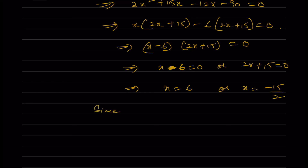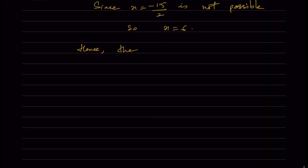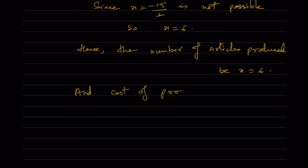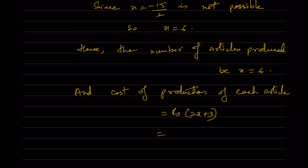Since x = -15/2 is not possible as the number of articles produced cannot be negative, x = 6. Hence the number of articles produced is 6. The cost of production of each article is 2x + 3 = 2(6) + 3 = rupees 15.